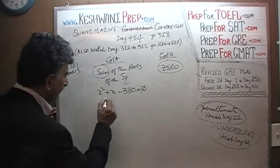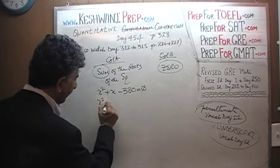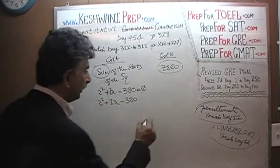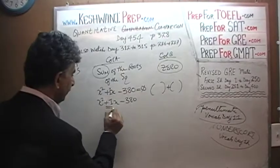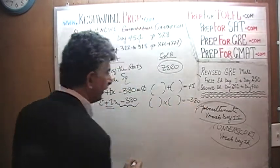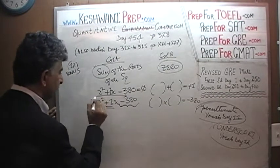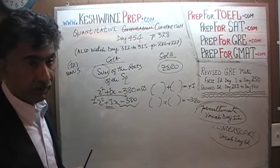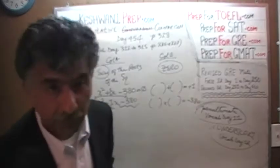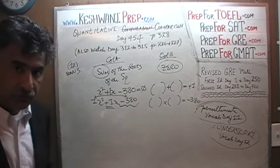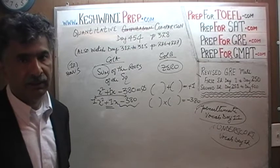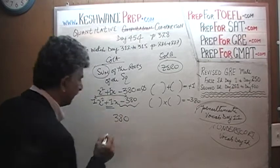So we are looking for two numbers. x squared plus 1x minus 380: we need two numbers whose sum is positive 1 and whose product is 1 times negative 380, which is negative 380. The trick is figuring out the factors of 380. Since it ends in zero, break it up: 380 is 38 times 10. Find the factors separately instead of keeping it as one big number.